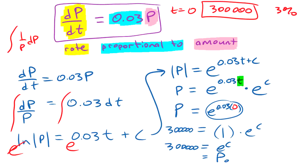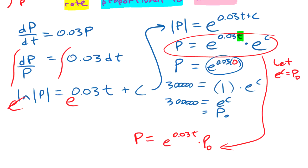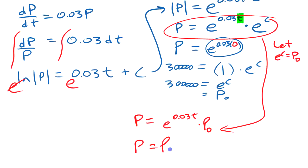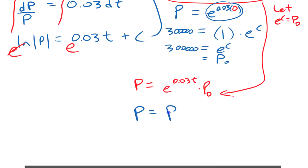I could put it over at the side here. I'm going to say let e to the c equal P₀, because that's what it is, initial population. So if I move down here, my solution to this is population is, so I'm going from here now.